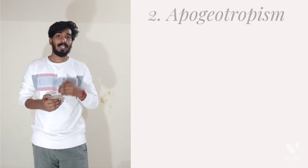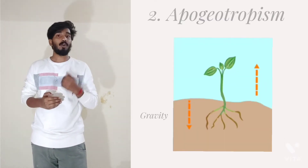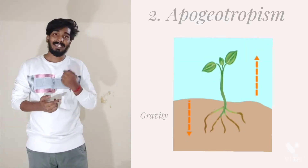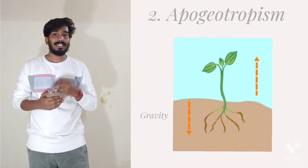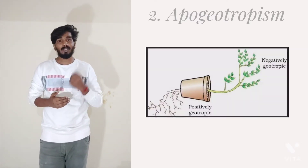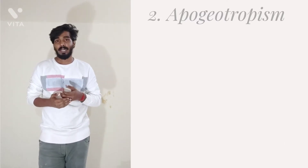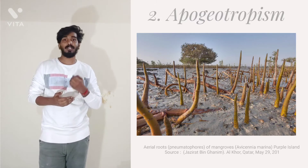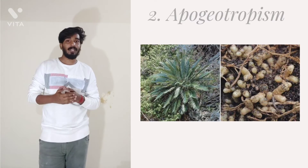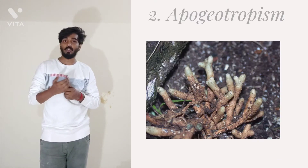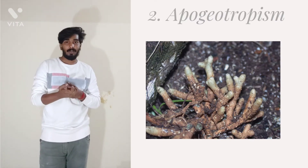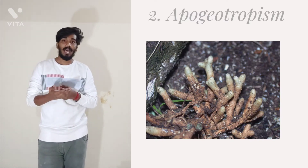The next type is apogeotropism, where the plant organs are pointed away from the source of gravity — generally aerially erect in nature, which is also called negative geotropism. The aerial parts of all plants are apogeotropic in nature. Some parts in the mango plant called pneumatophores are apogeotropic in nature, meant for the exchange of gases. In cycas, the coralloid roots are apogeotropic in nature, growing away from the source of gravity. This movement away from the source of gravity is known as apogeotropism.